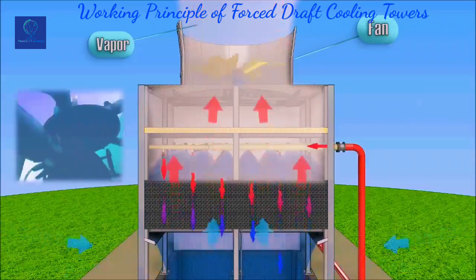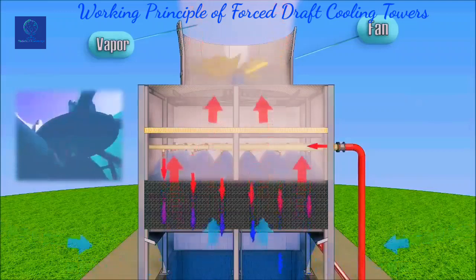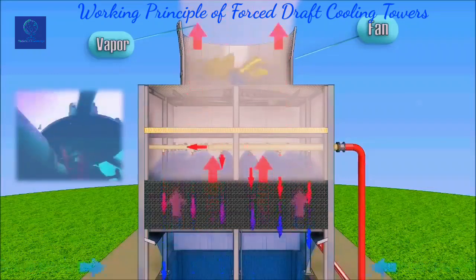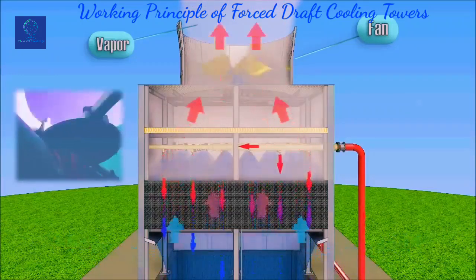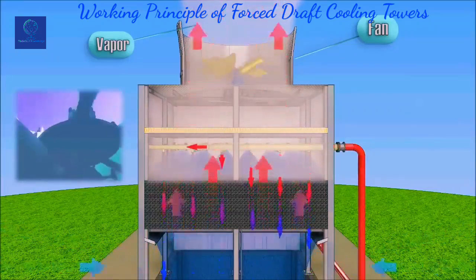The water cooling efficiency of fan cooling towers may be controlled by varying the supply air fans, including changing the fan speed.